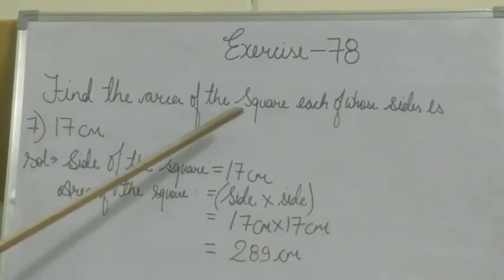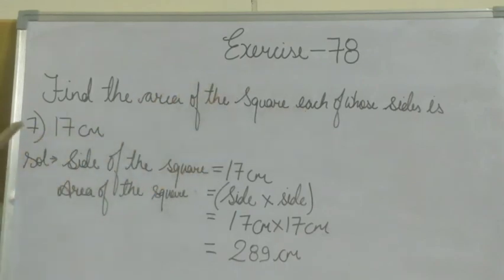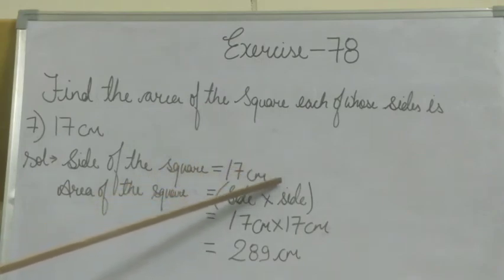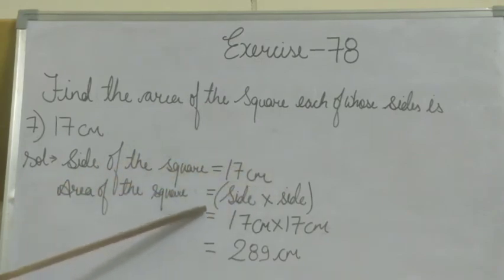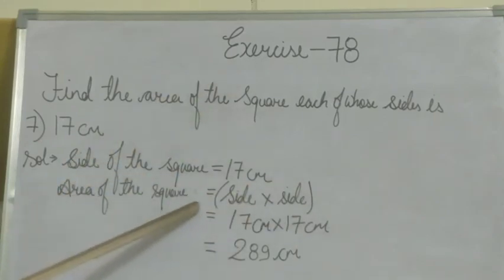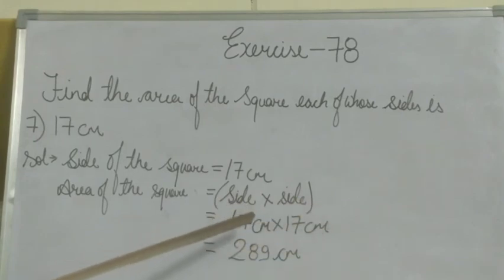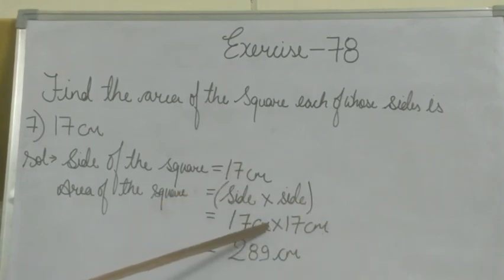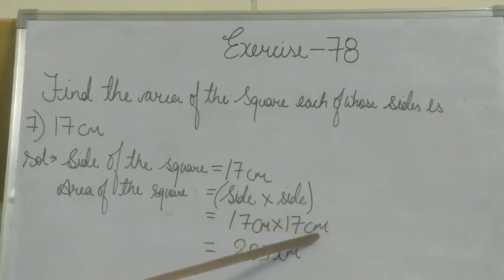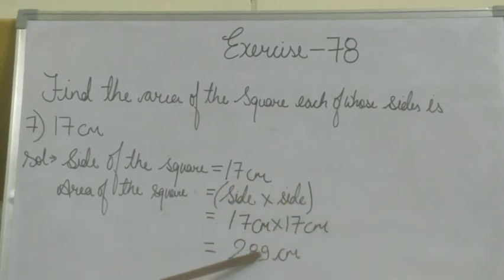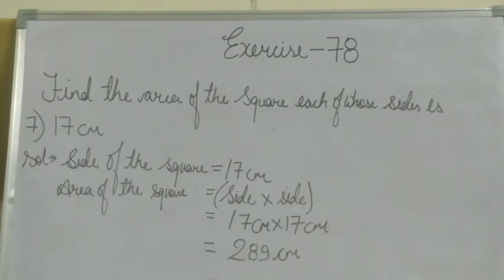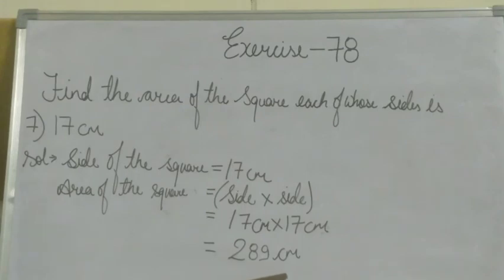Next question: find the area of a square of side 17 cm. Now we solve this question. The side of the square is 17 cm. The area of a square equals side into side. The side is 17 cm, so 17 multiplied by 17. When we multiply both numbers, we get 289 cm². Hence, the area of the square is 289 cm².